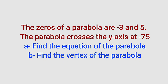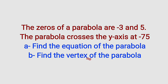Hello, dear viewers. In this tutorial, we are going to find a solution to this nice word problem question related to quadratic equations. The question reads: the zeros of a parabola are negative 3 and 5, and the parabola crosses the y-axis at negative 75. We are asked to find the equation of that parabola and also the vertex of the parabola.